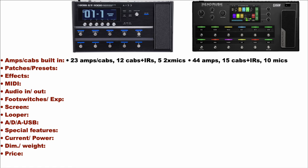First of all, the GT1000 has 23 amps and cabs, plus 12 standalone cabs and 5 mics built in. The Headrush offers 44 amps, 15 cabs and 10 mics. Both units offer the possibility to load third-party IRs. I would give a thumbs up to the Headrush as it offers more amps. It is worth noticing that the so-called AIRD amplifier design philosophy of Boss puts an emphasis on accurately recreating the interaction between a total amplifier setup — amp plus speaker section — so each amp model is recreated with its ideal speaker combination.